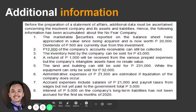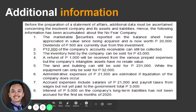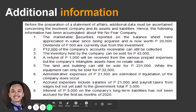Land and building can be sold for $231,000, while equipment can only be sold for $32,000. Estimated administrative expenses of $21,500 are expected if liquidation occurs. Accrued expenses include salaries and payroll taxes not yet paid to the government, totaling $3,000 — these are examples of unsecured liabilities with priority, and will be paid first over other types of liabilities. Additionally, interest of $5,000 on the company's long-term liabilities has not been accrued for the six months of 2020.